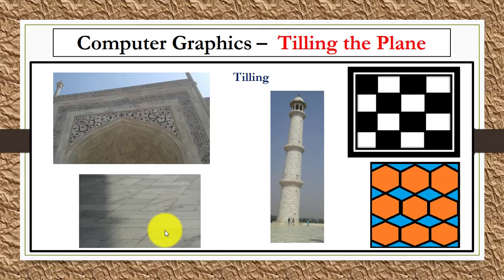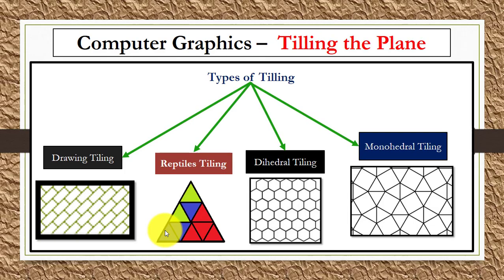Now we have different types of tiling: dragon tiling, reptile tiling, dihedral, and monohedral. You can see the examples here.